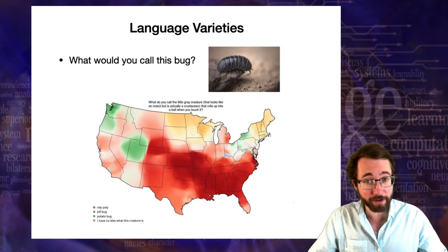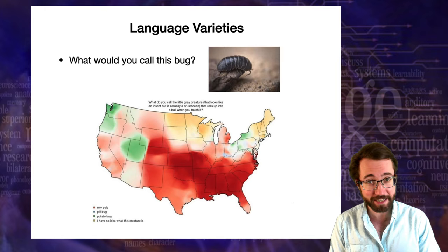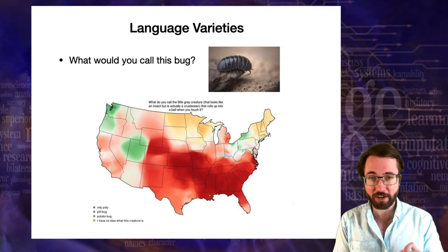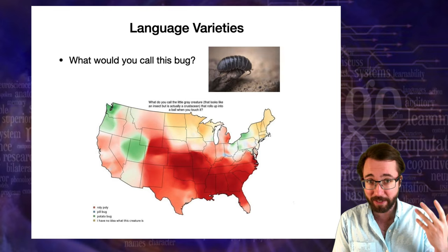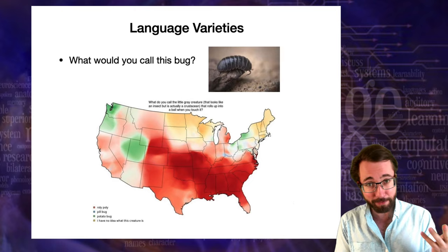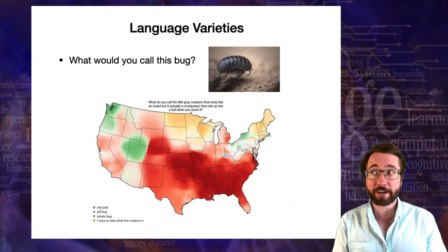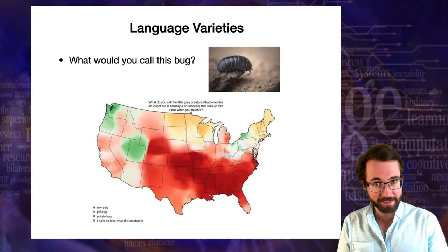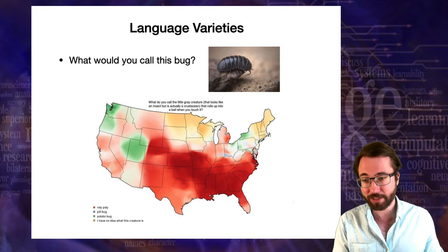This is an interesting case because this is a bug you typically talk about during childhood. The word you picked up for it was transmitted to you when you were interacting mostly with people who grew up in the same area. We see a lot of variance in regional dialects for words that deal with things encountered in childhood, like a roly-poly. I grew up calling it a doodle bug, which apparently isn't listed on this map.